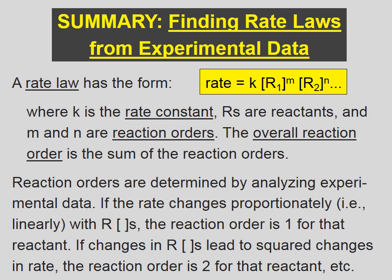Reaction orders are determined by analyzing experimental data. If the rate changes proportionately, i.e. linearly, with reactant concentrations, the reaction order is one for that reactant.